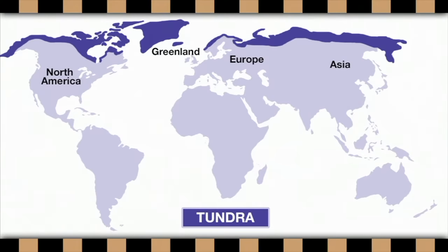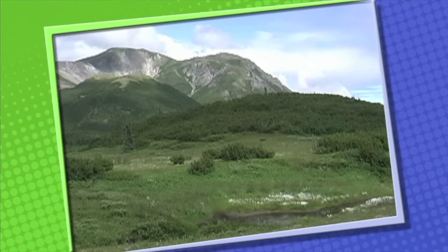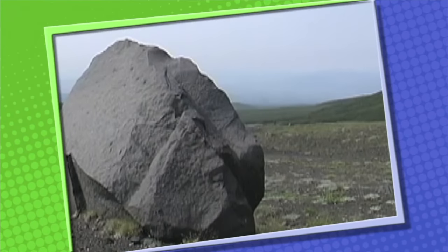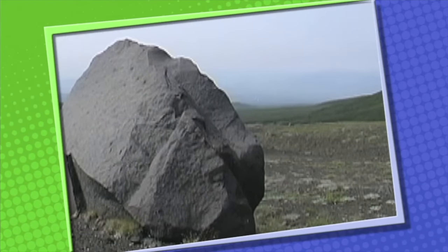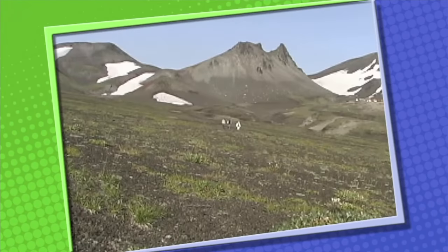The next habitat we're going to visit is the tundra. It's a place that is cold, windy, and dry. The tundra is found in North America, Greenland, and parts of Northern Europe and Northern Asia. The word tundra comes from a Finnish word which means barren land — it was considered barren because there were no trees on the tundra. But there are some plants that have adapted to the cold and bleak habitat: mosses, grasses, and small shrubs.